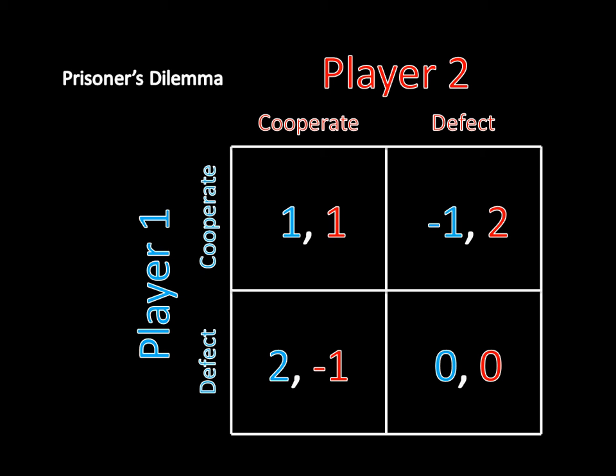The reason is as follows. Look at that top left corner — focus on the blue one that player one is getting by both players cooperating. Would player one want to stick with cooperation given that player two is cooperating? The answer is no, because if player one switches from cooperate to defect, now we're in that bottom left cell and he gets a payoff of two, which is greater than the one he was getting by sticking with cooperation.